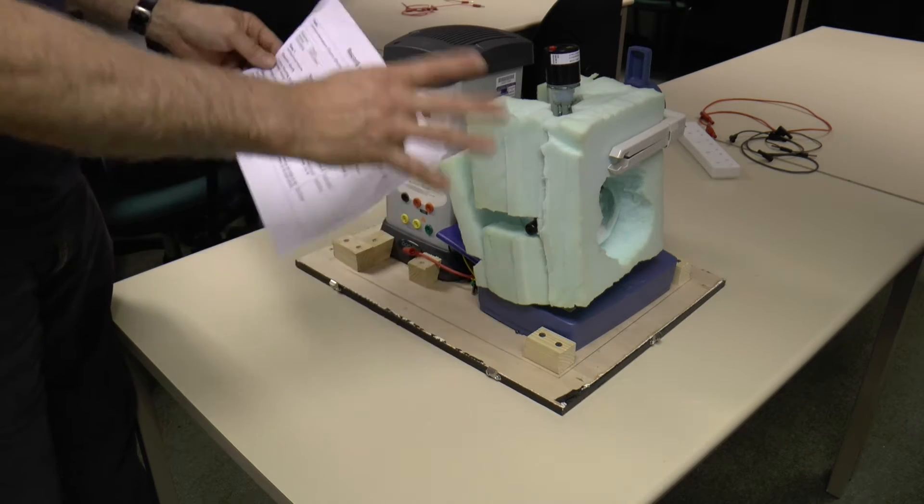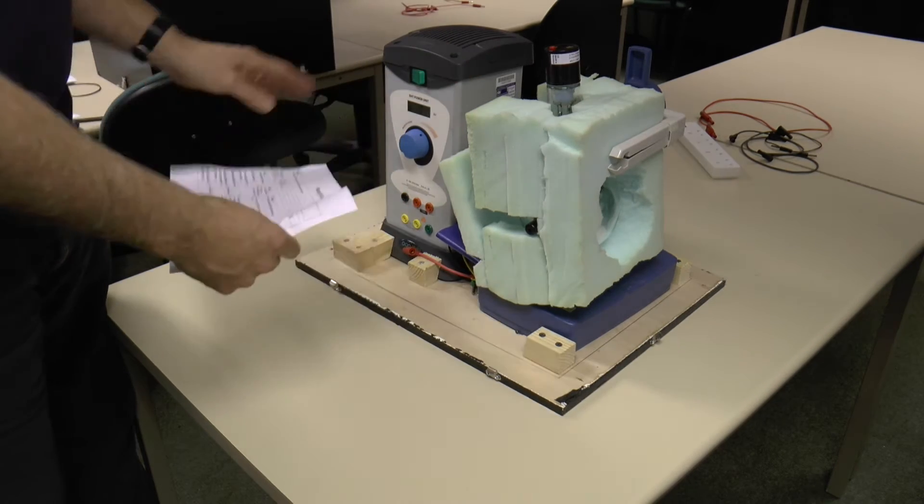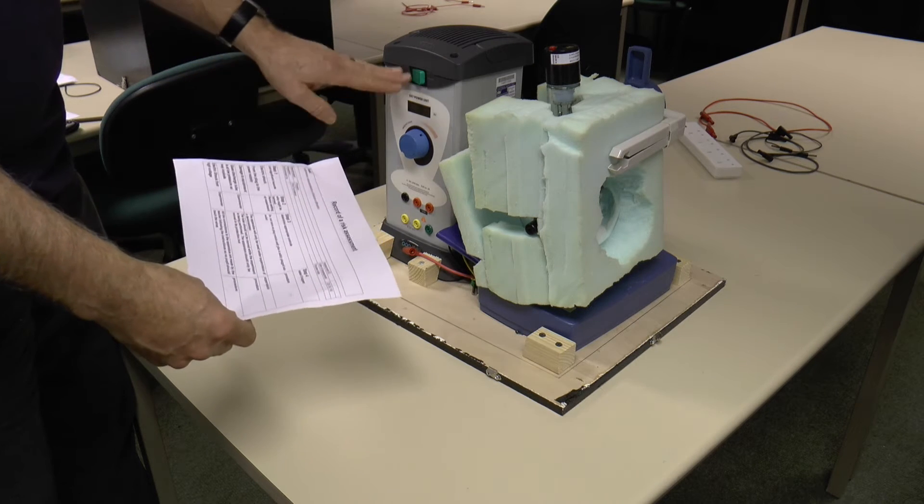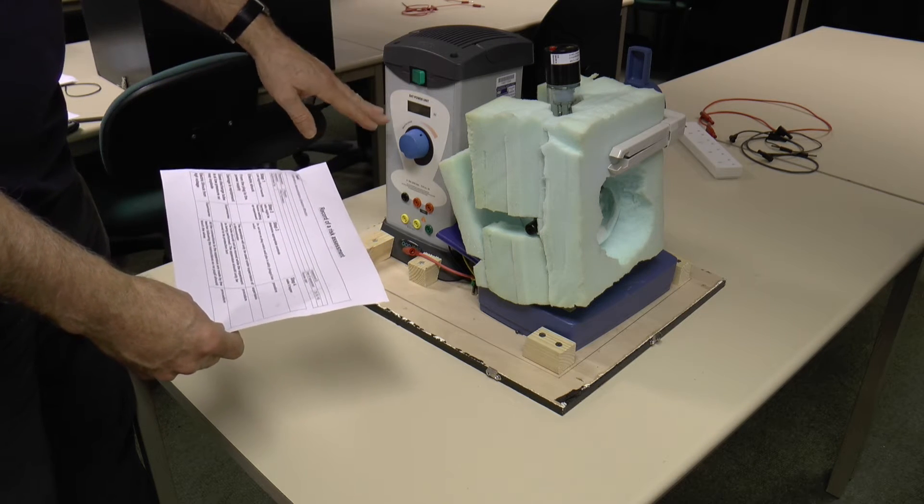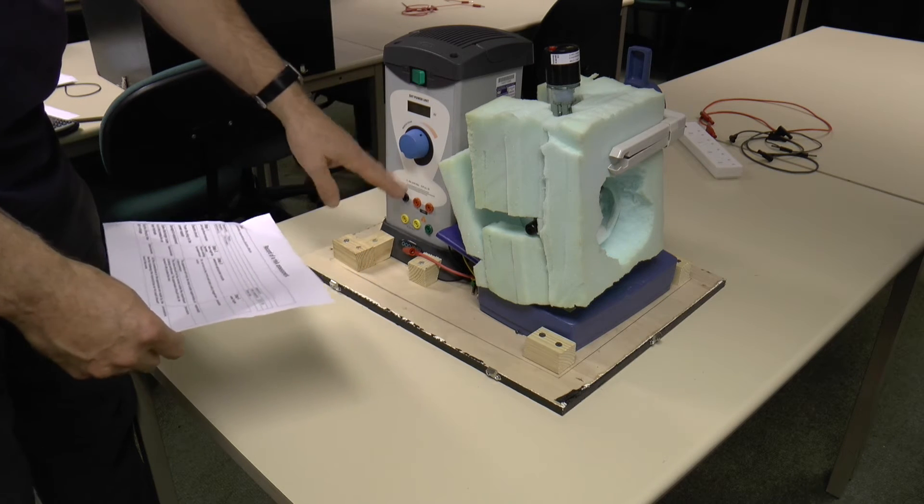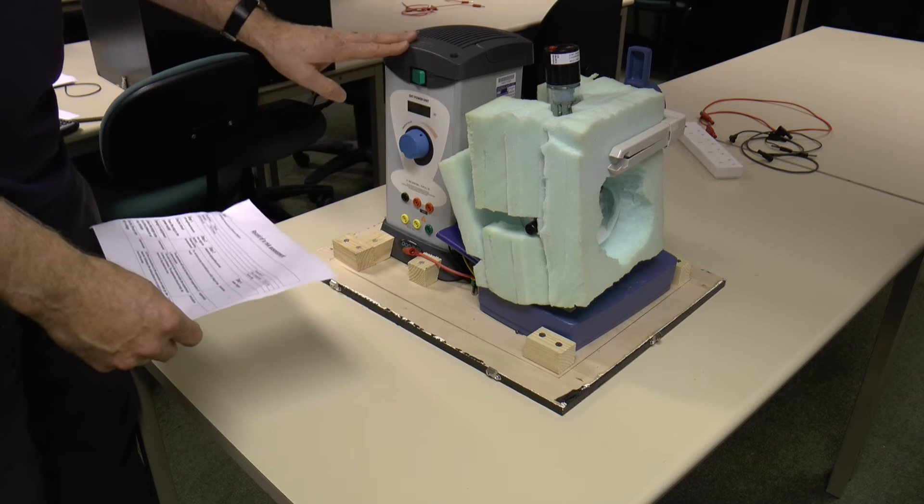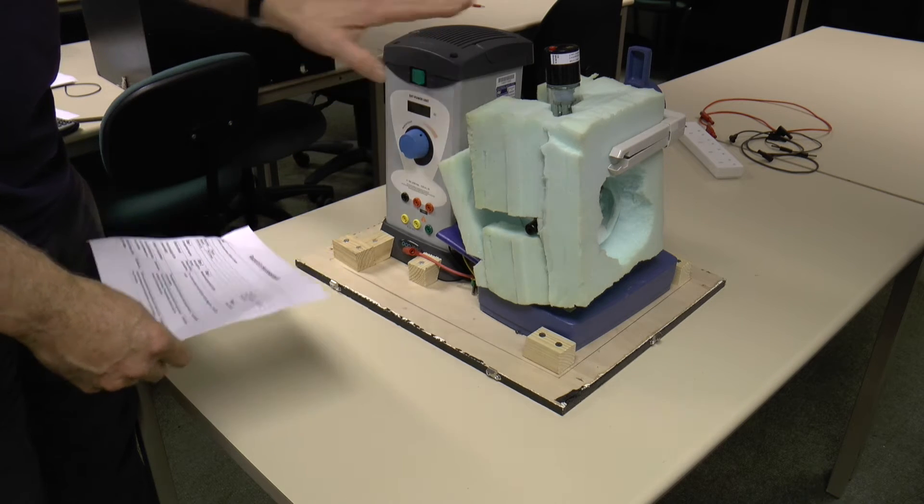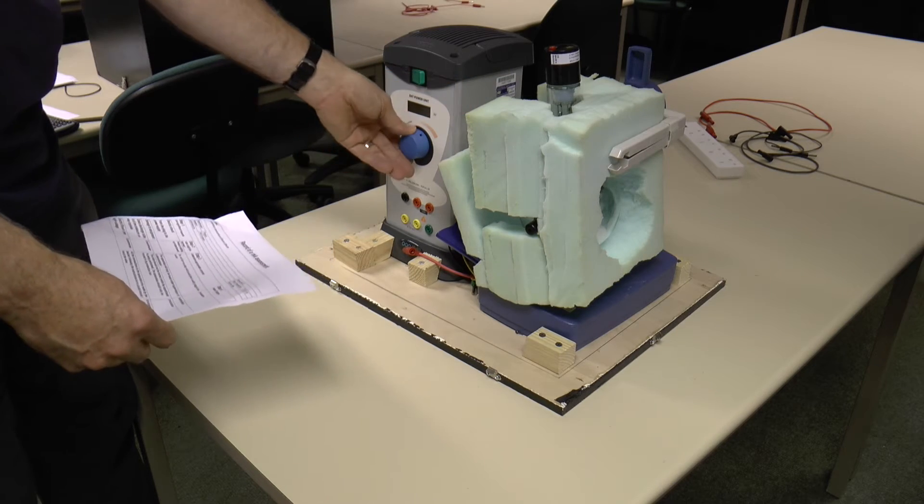Once it's set up, you don't touch it. All you do is vary the voltage here. Again, high power supply, high voltage, so make sure you set up with it turned off. Once it's set up, then you can turn it on and you don't have to touch the wires. Then you just change the power supply here.